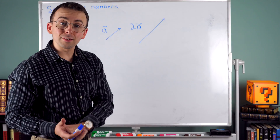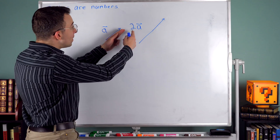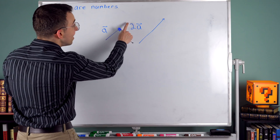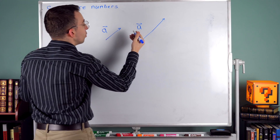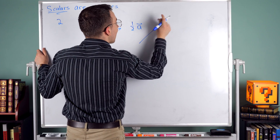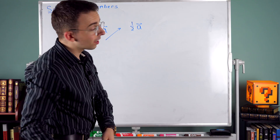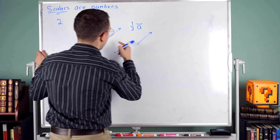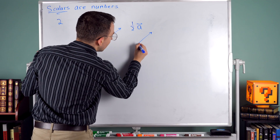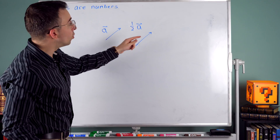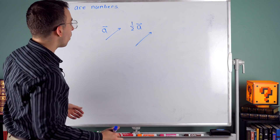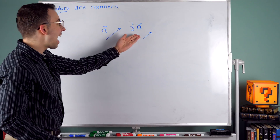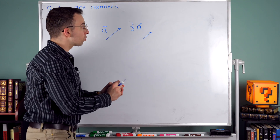Another reason it's called a scalar is because it scales the vector — it scales it up or it could scale it down. For example, if instead of two we multiplied by a scalar of one half, it's not going to change the direction. We're still going to have that original direction of our vector A, but the magnitude is going to be multiplied by one half. And that is half the vector A. That's how scalars work.